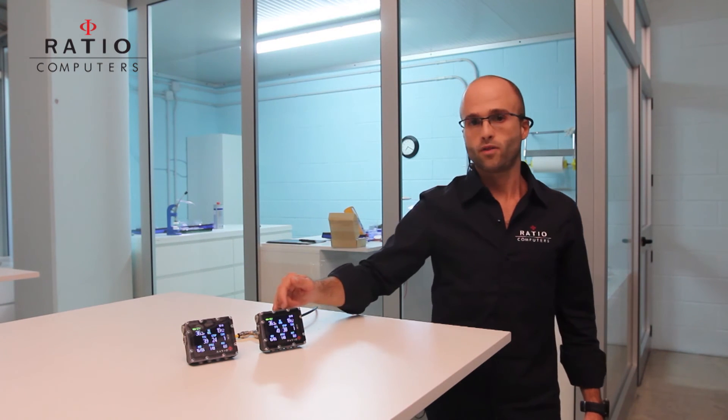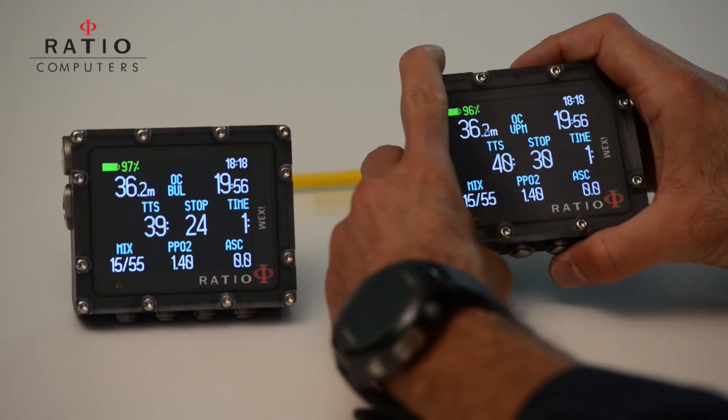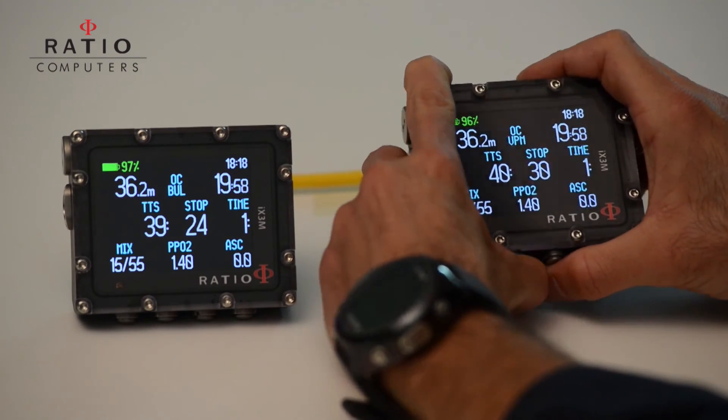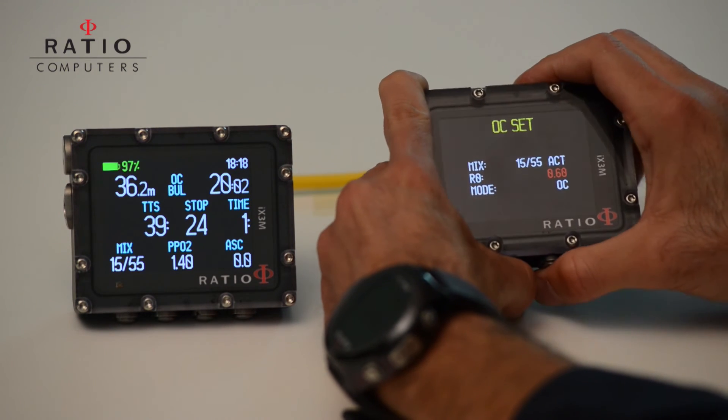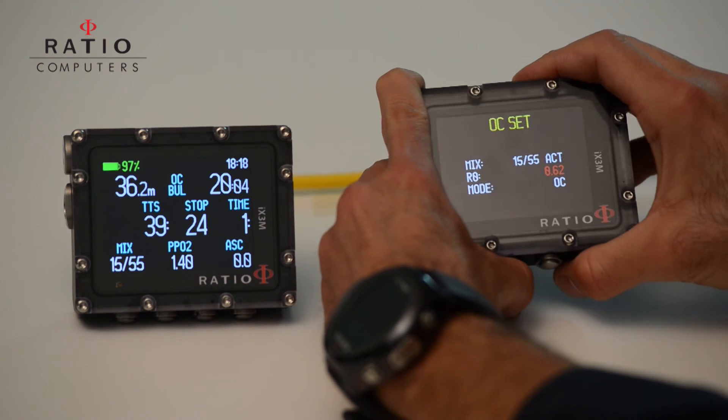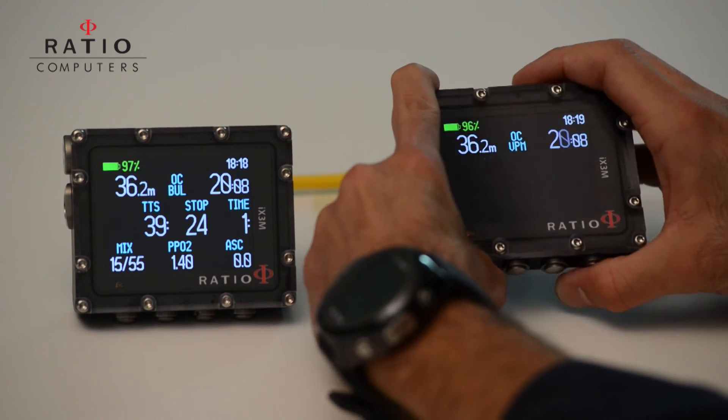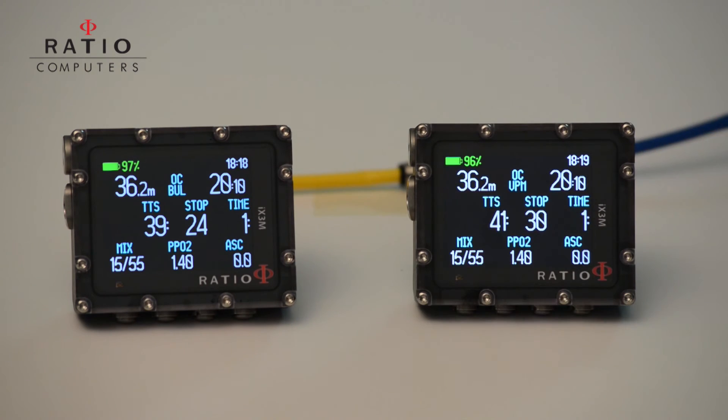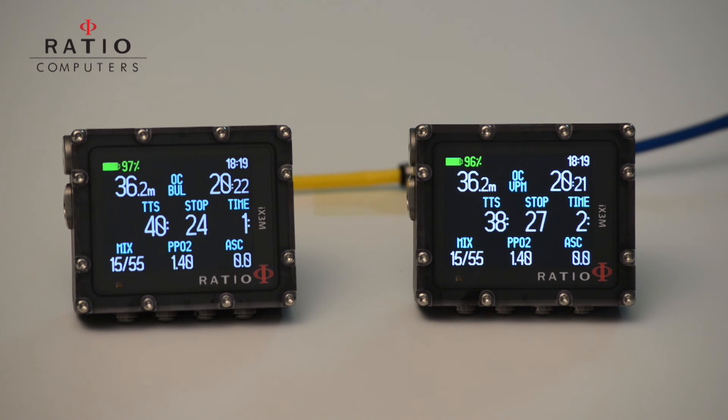The same we can do with the VPM algorithm by acting on the critical radius. For example, by changing the critical radius down to 0.5, we will see a reduction of the total time to surface.